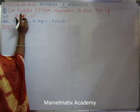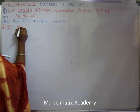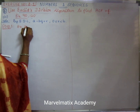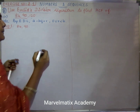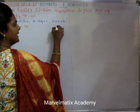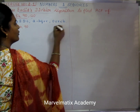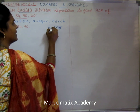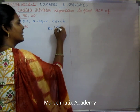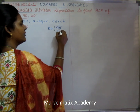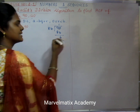First two numbers: 84 and 90. If you are going to divide, 90 goes into 84 only 1 time.